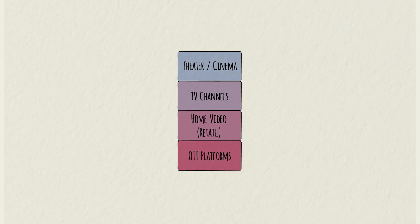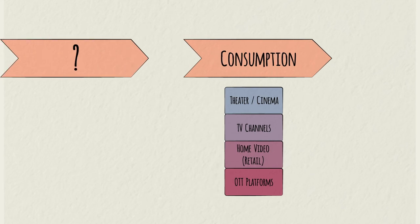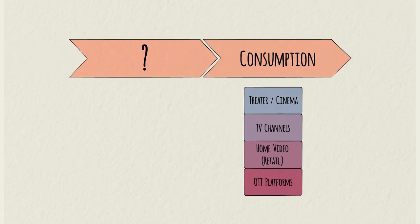We have now seen how content meets the consumer. We call this consumption, and it is the last step in the value chain. Next, we'll look at the earlier steps in the value chain, starting with how content is made.